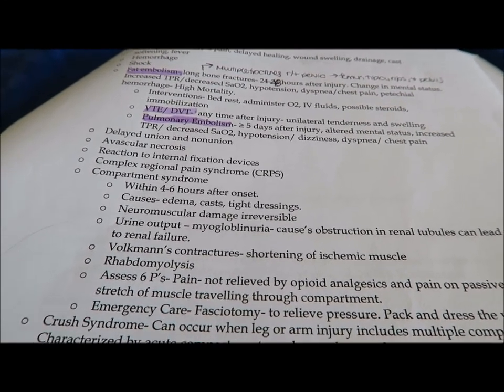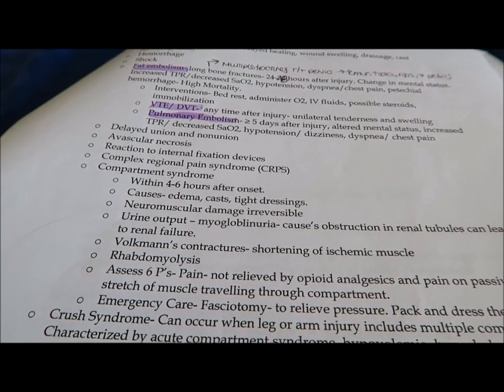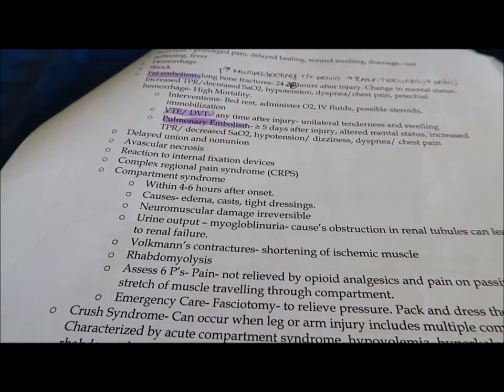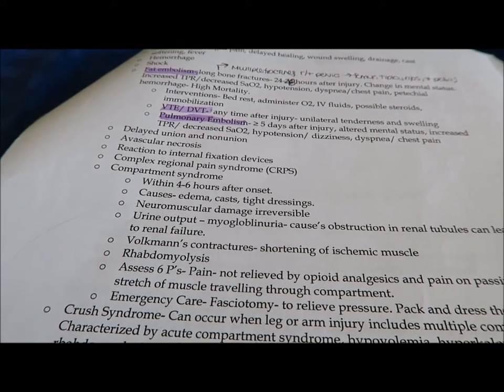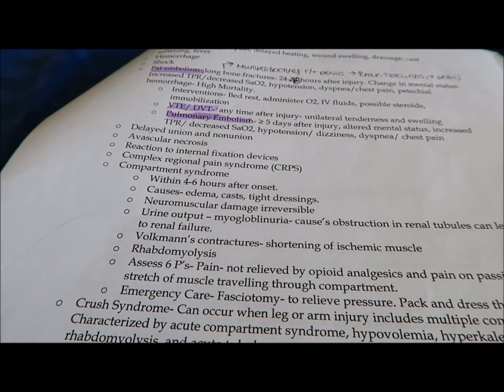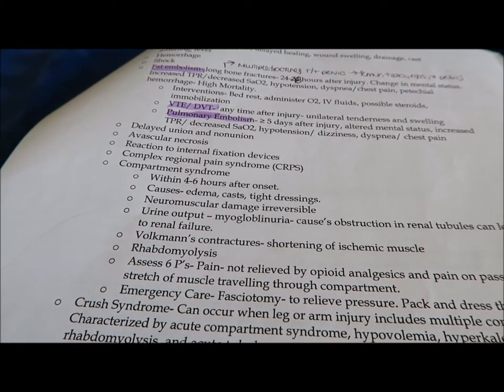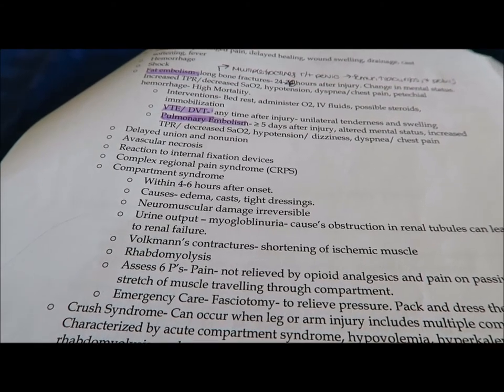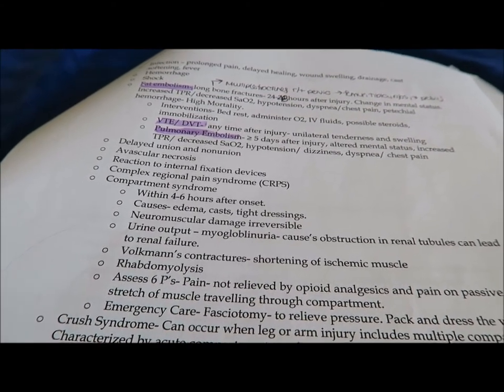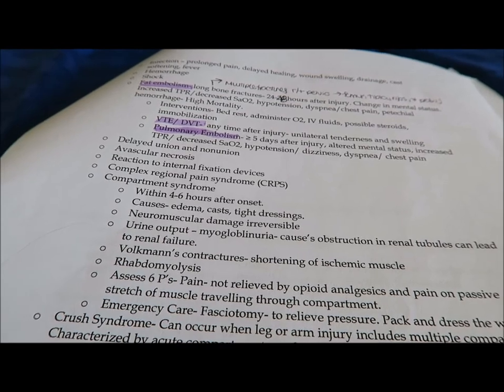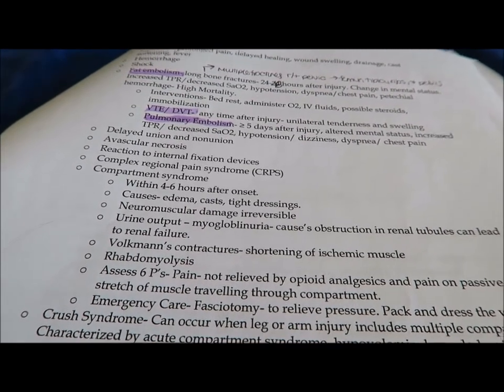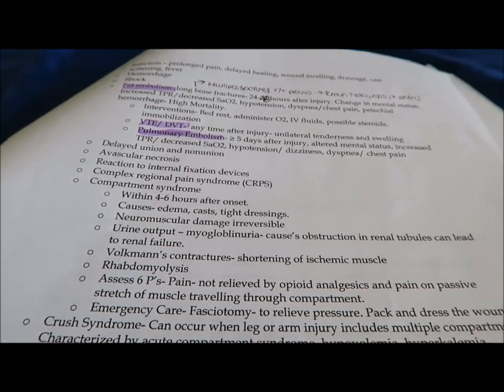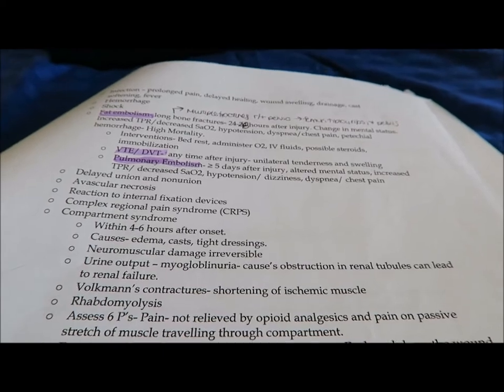They can be pretty similar. You're going to have the same kind of symptoms like dyspnea, chest pain. One other difference is with a fat embolism, they typically have petechial hemorrhage, especially around the chest and neck area. Pulmonary embolism doesn't have that, but a lot of the other signs and symptoms are the same, such as increased temperature, pulse and respiration rate, decreased SaO2, hypotension, dizziness. You want to look for those key differences between the two and really remember that, because that can be the difference between getting a question right and getting a question wrong.